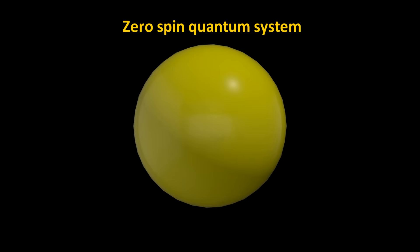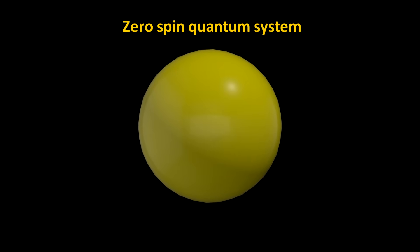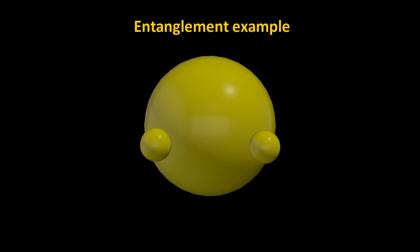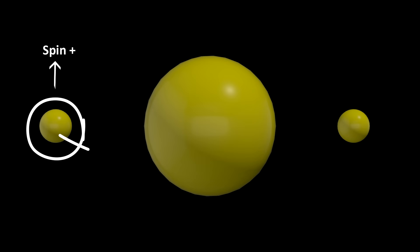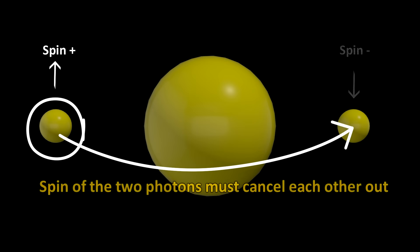Let's say we have a quantum system that has zero angular momentum, also known as spin zero, and it emits two photons simultaneously. Since photons have spin and since angular momentum must be conserved, if one photon has a spin up, the other photon must have a spin down. So the spin up and down cancel each other out. This is entanglement.